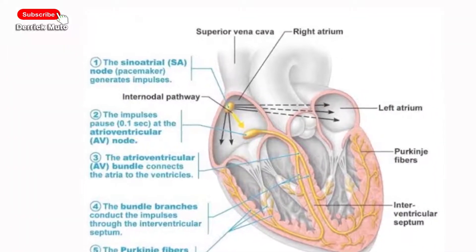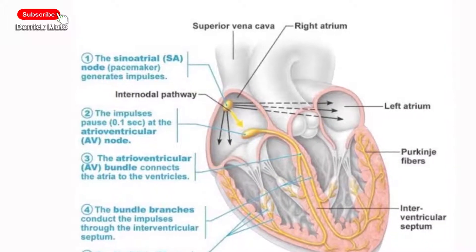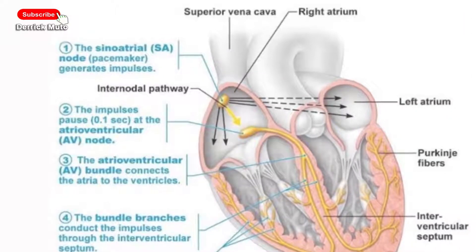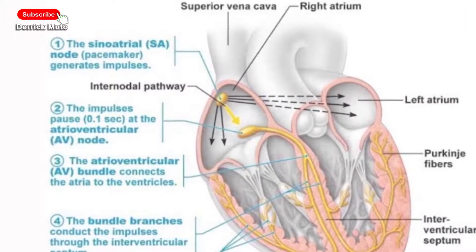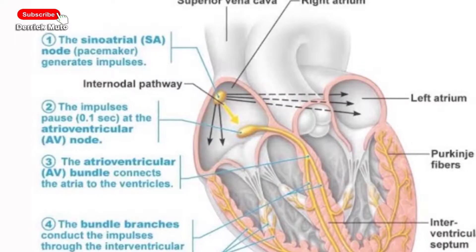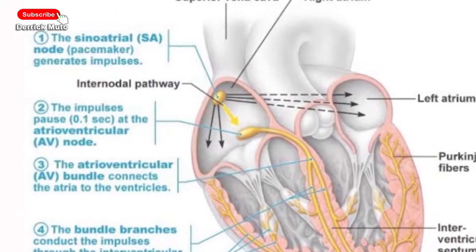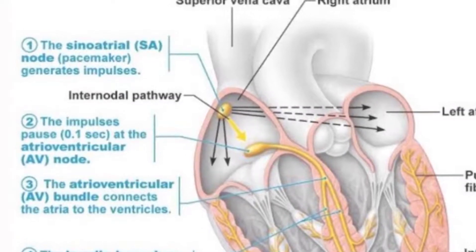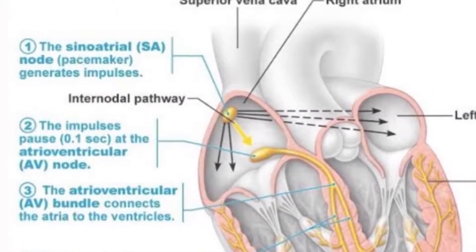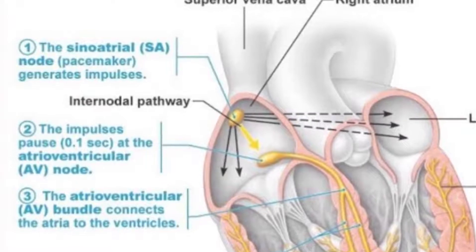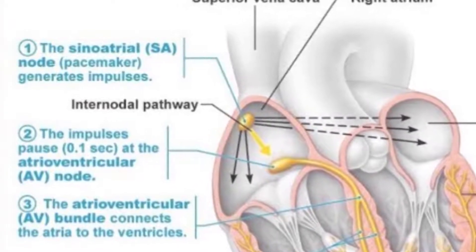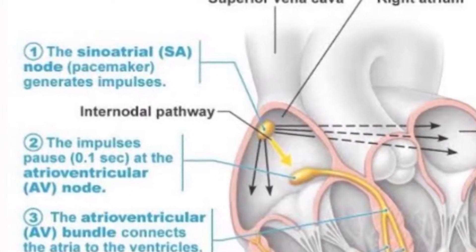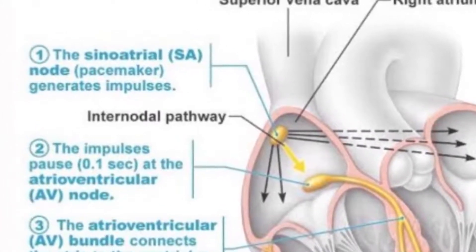The sinoatrial node is also called the node of Keith-Flack because it was first discovered in a mole by a medical student, Martin Flack, under the mentorship of Sir Arthur Keith. It is a small mass of specialized fibers found in the right atrium which initiates the heartbeat, and that is why it is called the pacemaker.